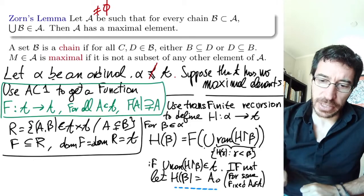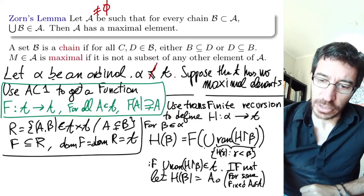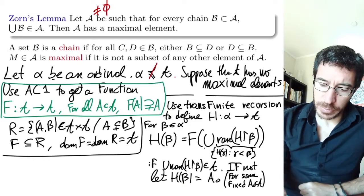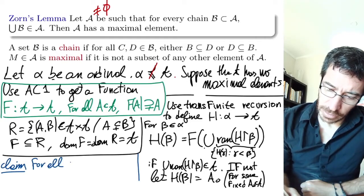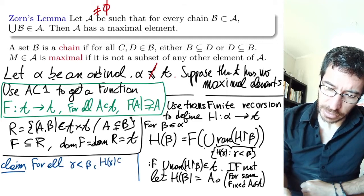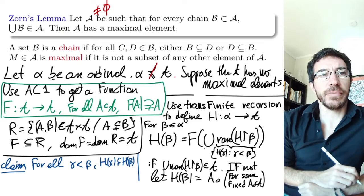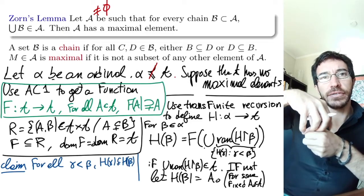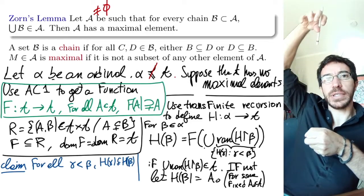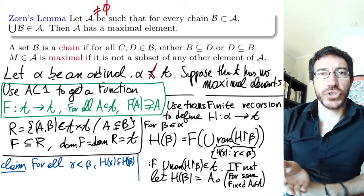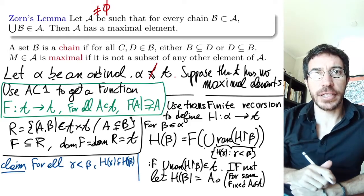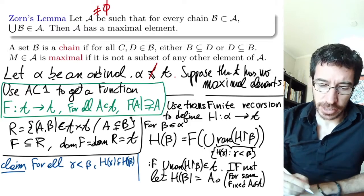So then we need to show the following claim: for all gamma less than beta, H(gamma) is a proper subset of H(beta). This is showing that this function defines a strictly increasing sequence of sets, bigger and bigger. How do we show this? We show this by transfinite induction.